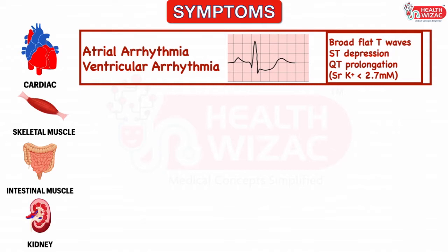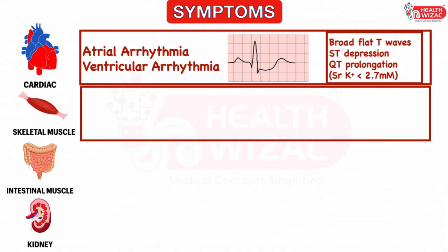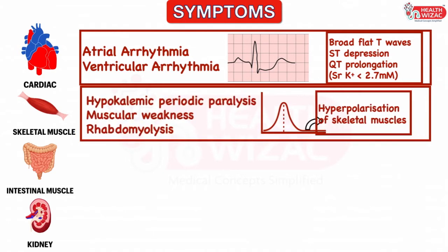Hypokalemia results in hyperpolarization of skeletal muscles, which impairs the muscle capacity to depolarize and contract, thus leading to weakness and even paralysis. Apart from this, hypokalemia may also result in rhabdomyolysis.